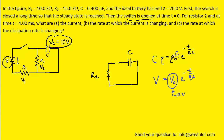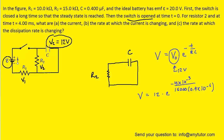We plug in 12 volts for the initial voltage, use R2 for the resistance, the known capacitance, and the time stated in the question as 4 milliseconds. All values are converted to their standard units. When we compute this, we get approximately 6.16 volts — the voltage acting across the capacitor after 4 milliseconds.